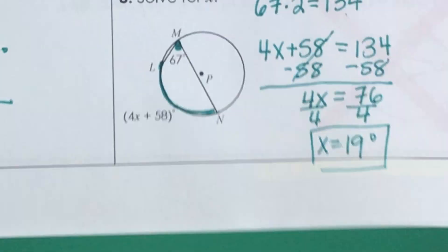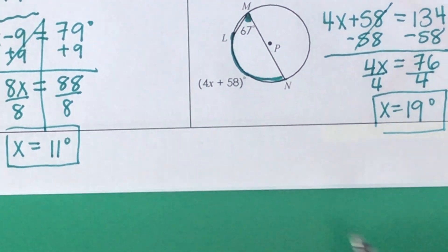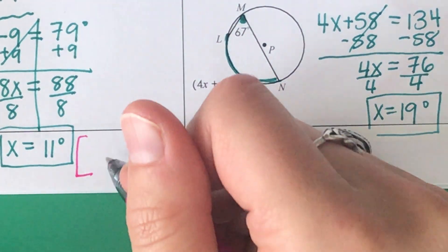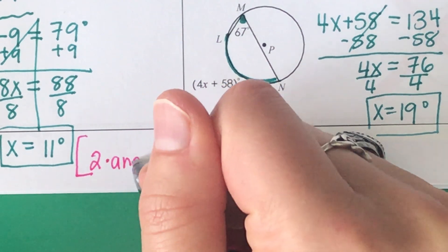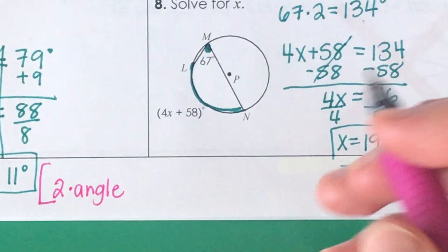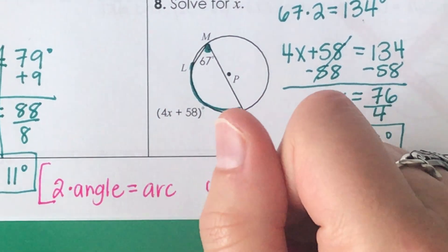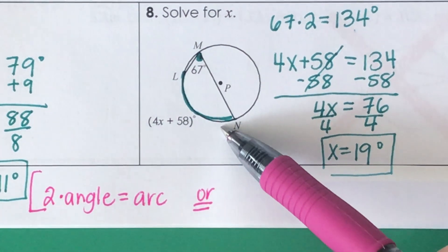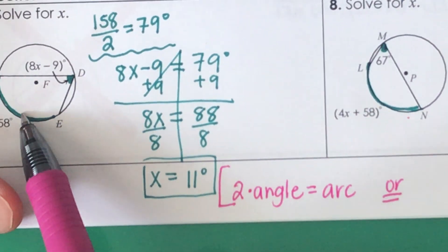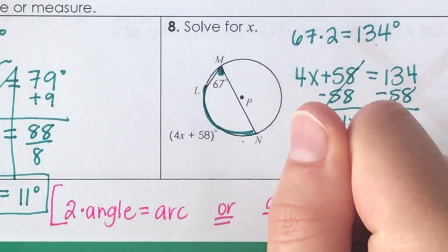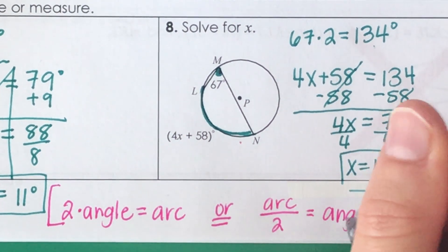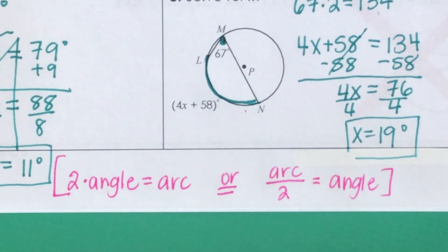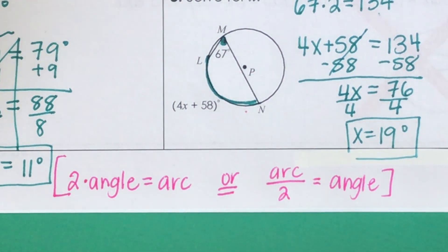Here's a helpful note to remember the difference between the two cases: 2 times the angle gives you the arc — that is, if you're given the angle, multiply by 2 to get the arc. Or, if you're given the arc, divide the arc by 2 to get the angle. The angle is always the smaller one; the arc is always the larger one.